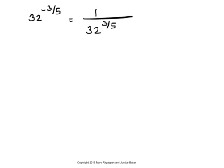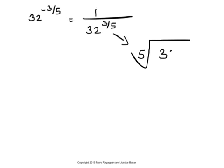Let us now evaluate 32 to the power positive three-fifths. A number with a rational exponent can be written as a radical, too. The denominator of the rational exponent, namely 5 here, represents the index of that radical. And the numerator, that is 3 here, of the rational exponent, represents the power of the value obtained. So 32 to the power three-fifths can be written as the fifth root of 32, and that being cubed.